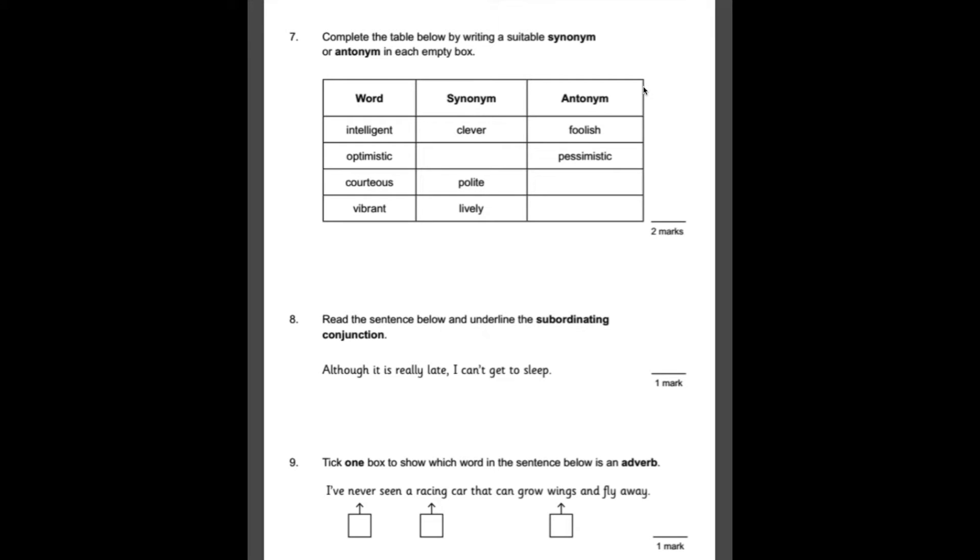Number seven, complete the table below by writing a suitable synonym or antonym in each box. So a synonym is the same as the original word. It means it's the same and an antonym means the opposite. So looking at the gaps we've got, we have optimistic. One of the opposites they've given us is pessimistic. So we need a word that is similar to optimistic. And if someone's optimistic, they tend to be quite a positive person. So that would be my answer, positive. And likewise with this gap here, we want an antonym of the word courteous. So if someone's courteous, they're very polite. If they are the opposite of that, then they would be quite rude. And finally, with this empty one here, we want an antonym of the word vibrant. So if something's really vibrant and really lively, the opposite would mean that it's quite dull.